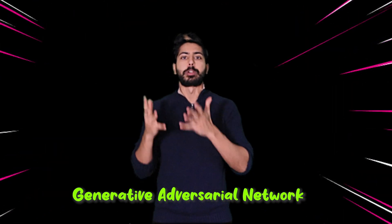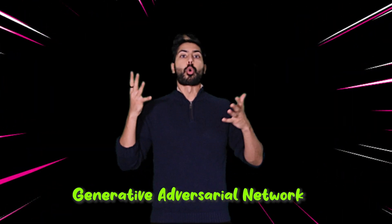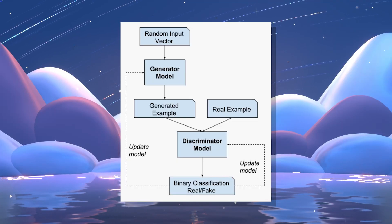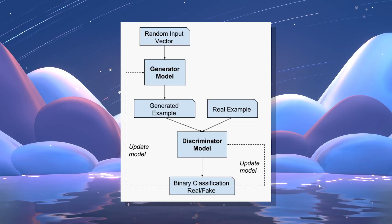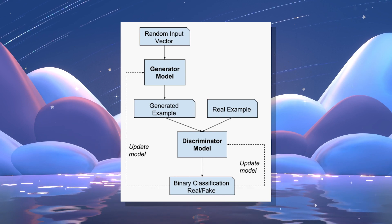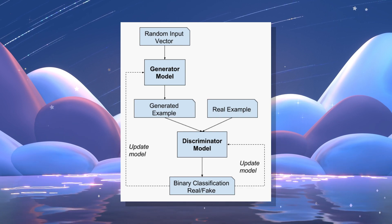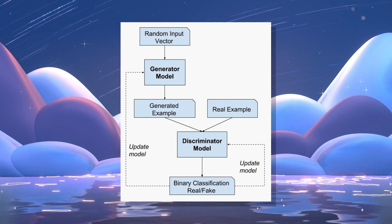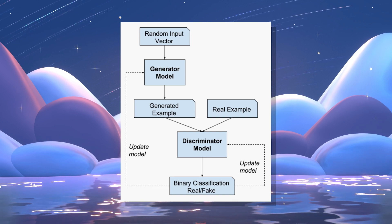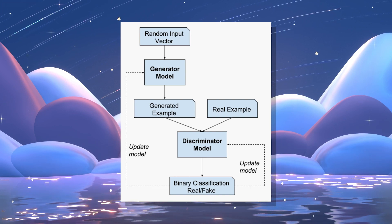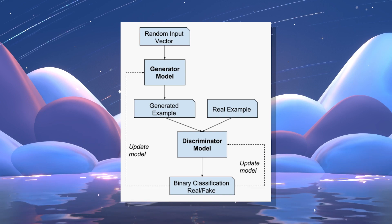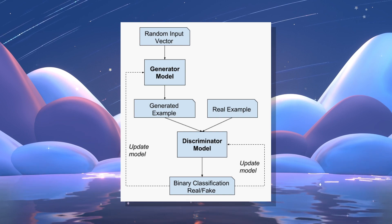For faster generation, we could use a generative adversarial network, or GAN, which generates samples using only one call to a neural network. GANs are two neural networks in a versus battle — one tries to spoof, one tries to detect the spoof. Over time they both improve, and we can use the spoof generator to generate a very realistic-looking result.